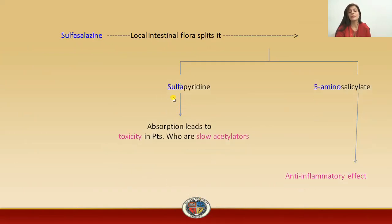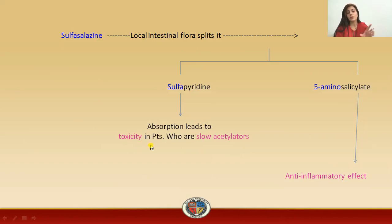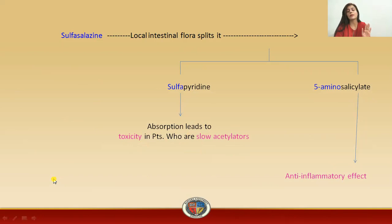The second component is sulfapyridine, which is not the required component. When it is absorbed into the bloodstream, it leads to toxicity — specifically in patients who are slow acetylators. This toxic effect does not occur in patients who are fast acetylators. This was all about sulfasalazine.